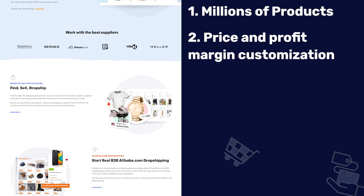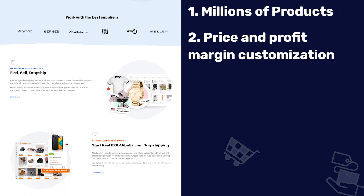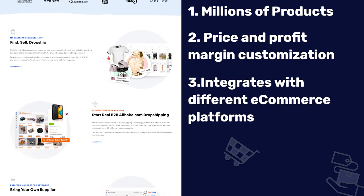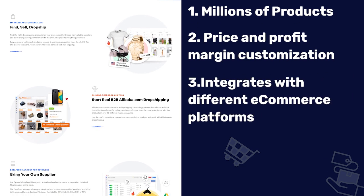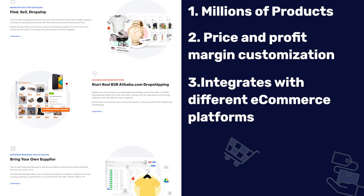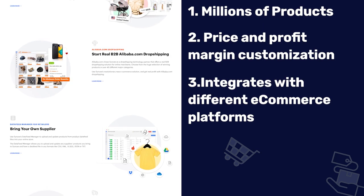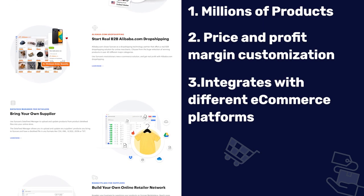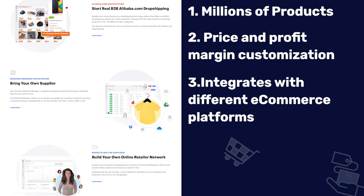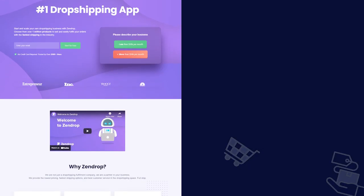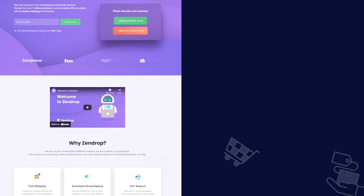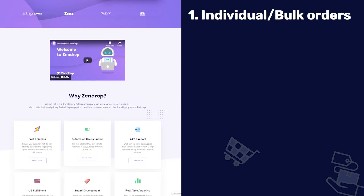Syncee is another Oberlo alternative that's definitely worth mentioning. They offer millions of products from reliable suppliers, you can customize your product prices and profit margins, and Syncee supports 10 different ecommerce platforms like Shopify, Jumpseller, Squarespace, and much more.